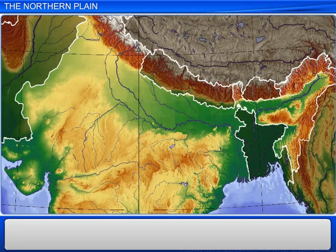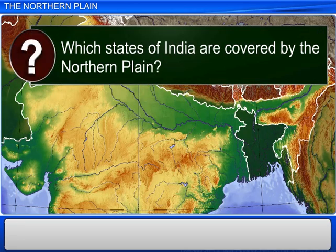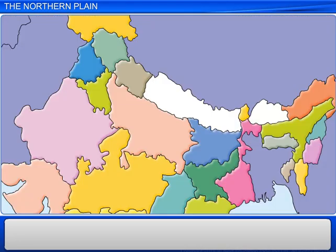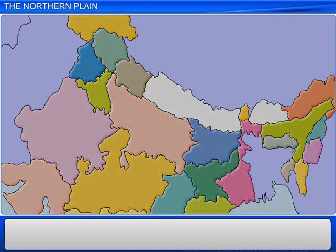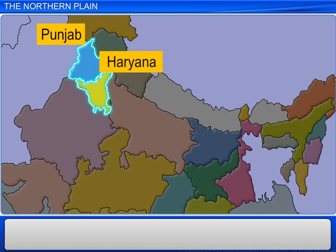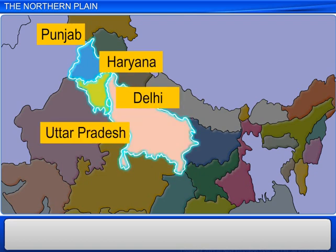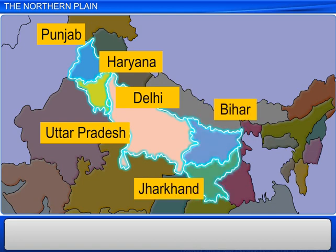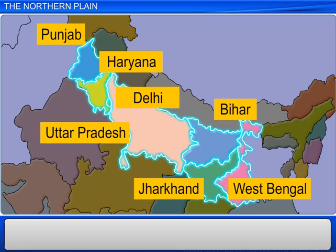The different states of India covered by the northern plain are Punjab, Haryana, Delhi, Uttar Pradesh, Bihar, parts of Jharkhand and West Bengal, and Assam.